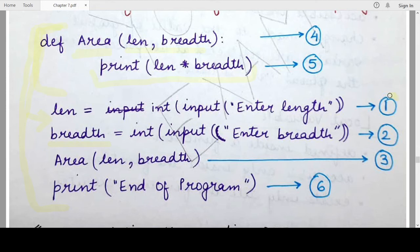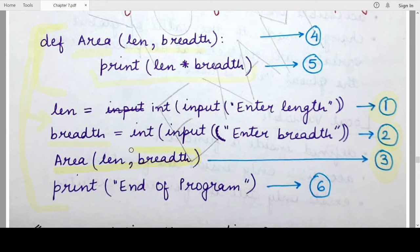So the first step the program performs is to ask the user to enter a value for the length. The second step is to ask the user for the breadth of the rectangle. In the third step, the program transfers control to the next line, which is a function call to the function we just defined, passing the arguments length and breadth. This changes the flow of control, which is transferred inside the function definition.